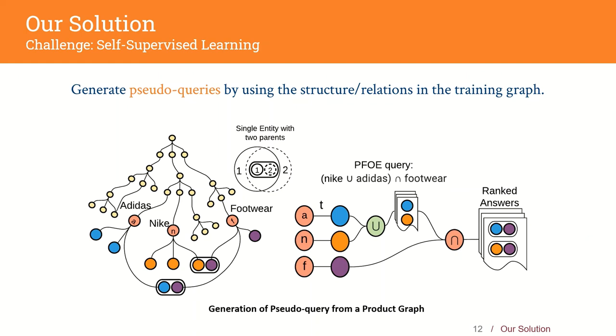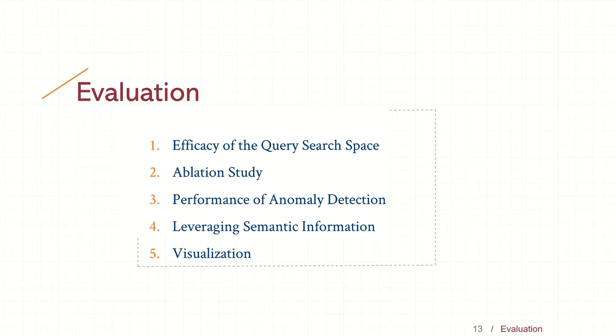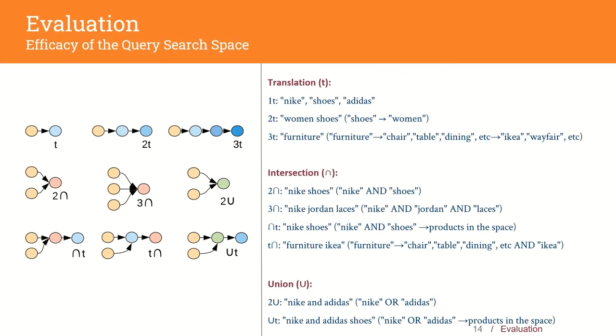Let's now move on to the evaluation of HYPE. Our evaluation focuses on five research questions. For the task of reasoning over knowledge graphs, we want to find out if hyperboloid embeddings perform better than the baselines at learning hierarchical relations. We also want to find the contribution of individual components in the HYPE model through an ablation study, and find out if the representations capture relevant data features for a downstream task such as anomaly detection. We consider the query types of translation, intersection, and union.